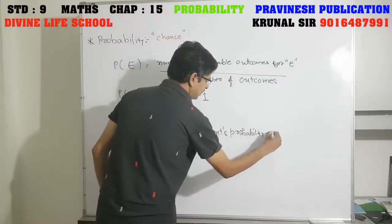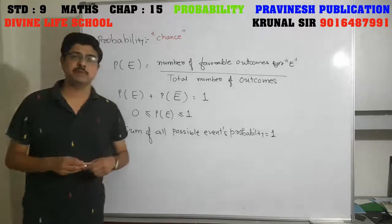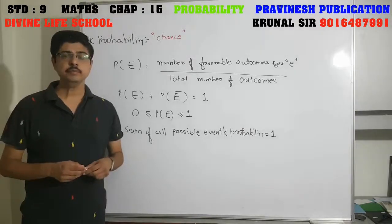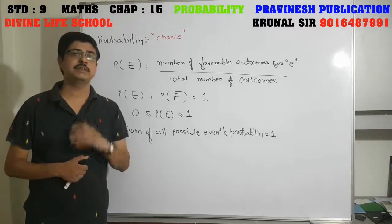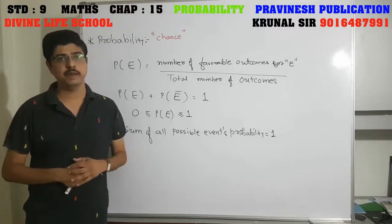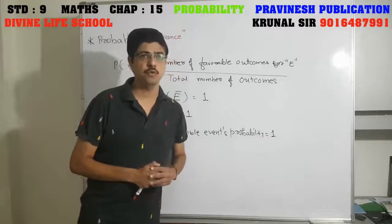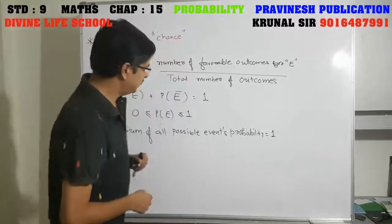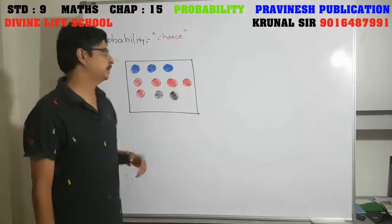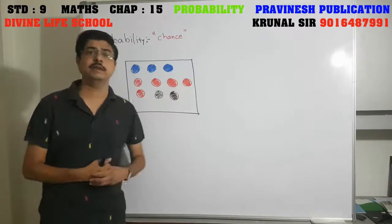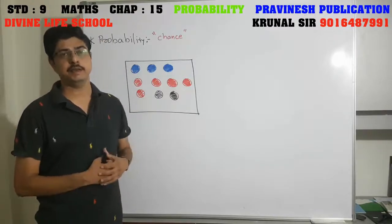If you do any experiment and get, for example, 4 different results, those results each have their own probability and the addition of all probabilities equals 1. Let us understand this by an example.